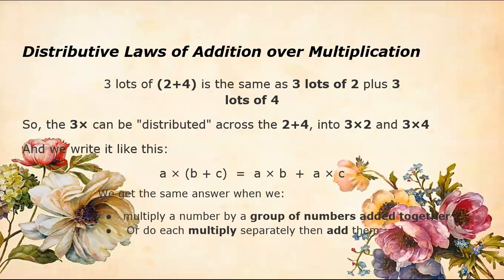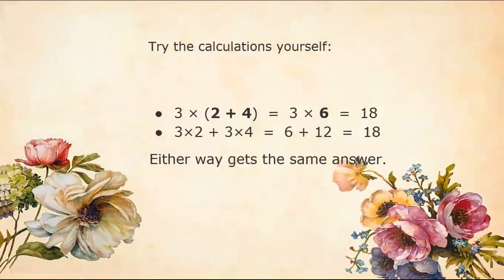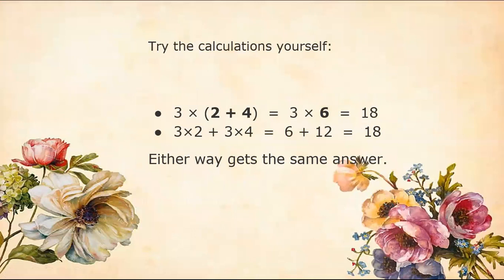If we have 2 plus 4 and then multiply it with the number 3, we'll get the same answer as if we multiply first a and b and then add it with a multiply c. Multiply a group of numbers added together or do each multiply separately and then add them. I hope you're going to try the calculations yourself and either one gets the same answer.